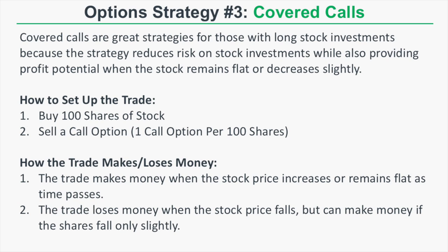The trade makes money when the stock price increases or remains flat as time passes — the stock price can even decrease slightly but not too much. The trade loses money when the stock price falls significantly, but can make money if shares fall only slightly because you collect a premium for selling that call option, which provides some downside protection. Let's look at a covered call example.